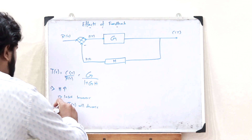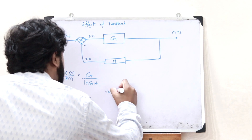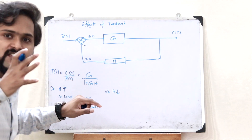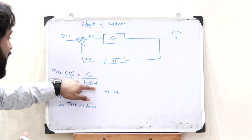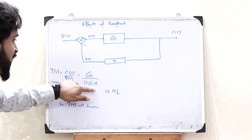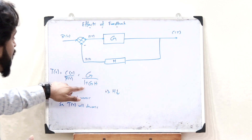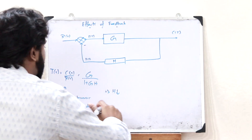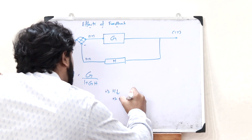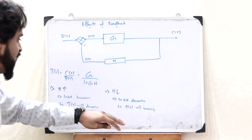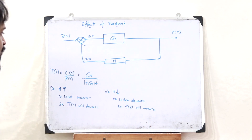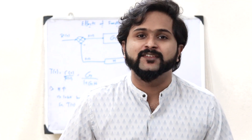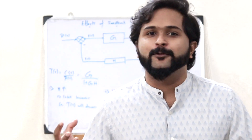Now let us assume we are decreasing the value of H. As H decreases, the value of the denominator 1 plus GH also decreases. Since a smaller denominator gives a larger fraction, the overall expression T(s) increases. This is how a negative feedback element affects the overall gain of a control system.